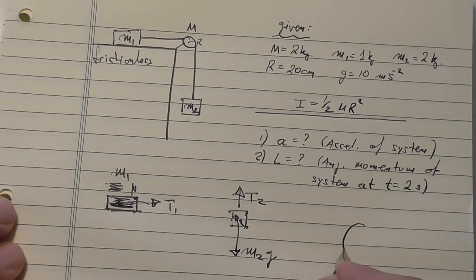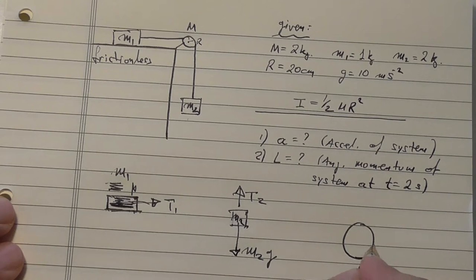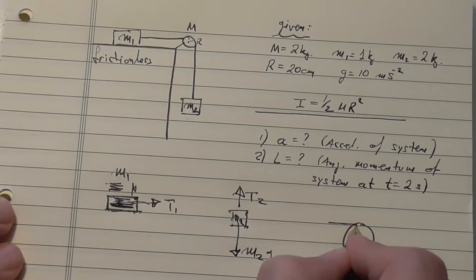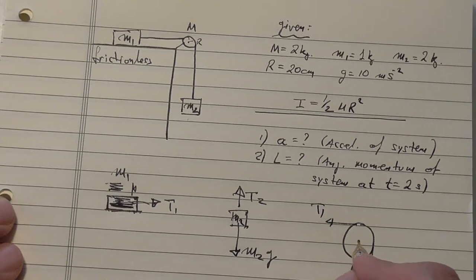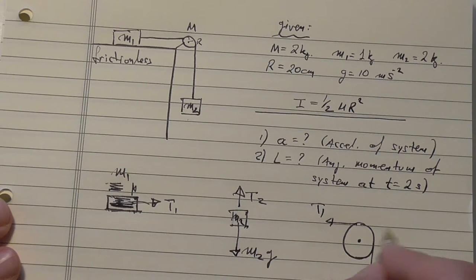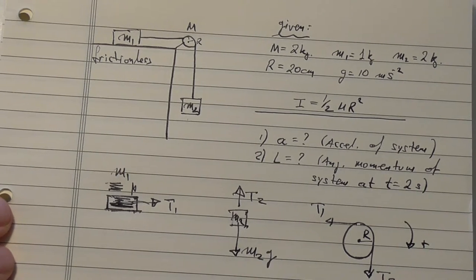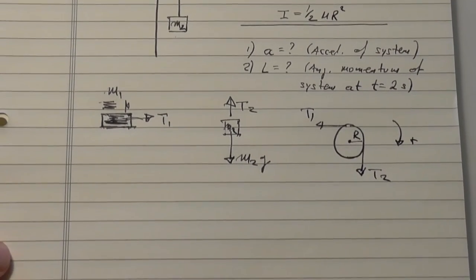And notice that we said that this side is frictionless, so we neglect friction on the first body. And of course, we have the disk, which has T2 on this side and T1 on that side. Axis of rotation around the center, has a radius r, and we can take the positive direction of rotation along this way.